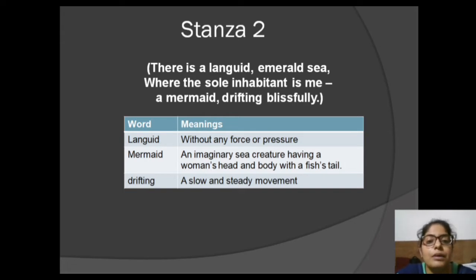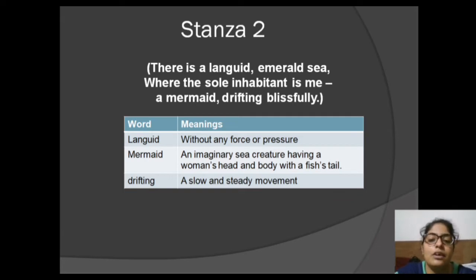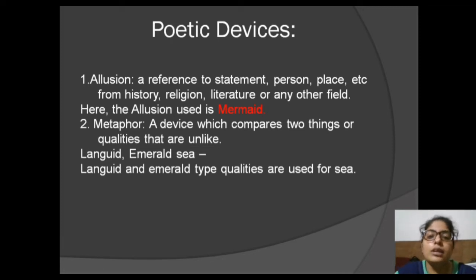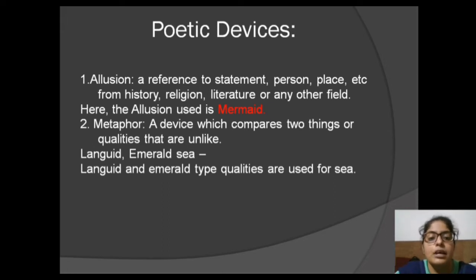Amanda imagined herself as a mermaid because she needed peace and did not want her parents to continuously nag or instruct her. The poetic device used here is allusion — a reference to a statement, person, place, or thing from history, religion, literature, or any other field. The mermaid is an allusion taken from mythology. Also, 'languid' and 'emerald' are qualities used as a metaphor for the sea, comparing two unlike things.